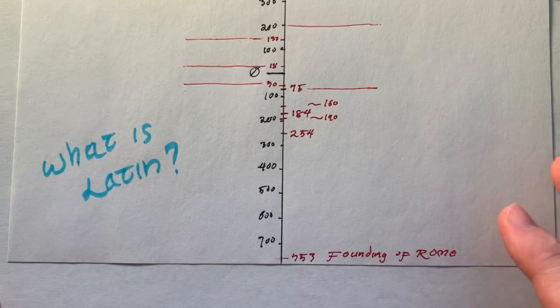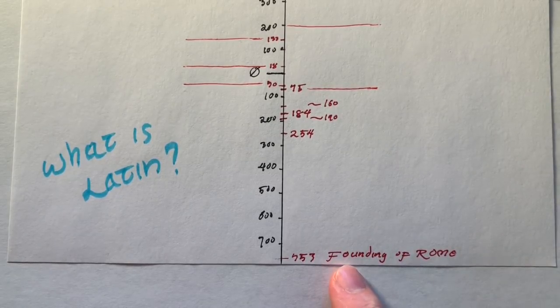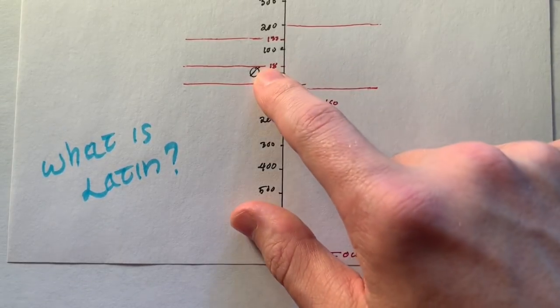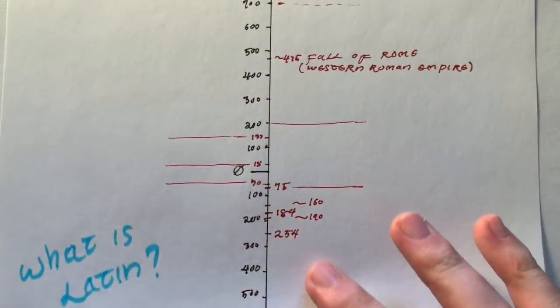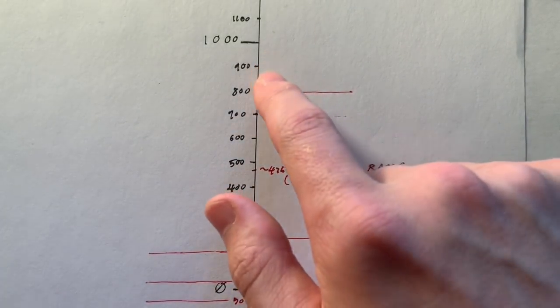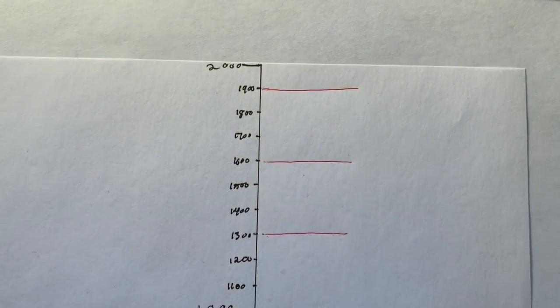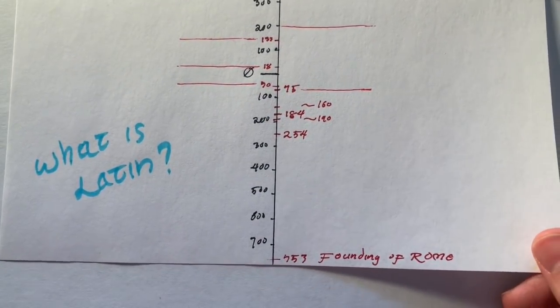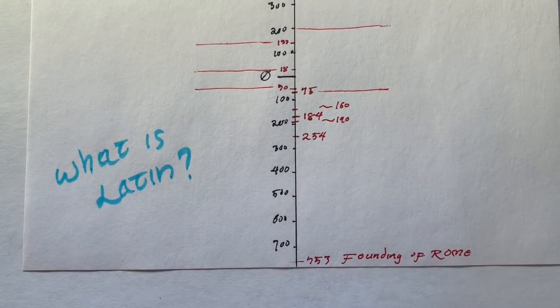Here we have a timeline I have drawn up. We can talk about the passage of time. Here we see the legendary founding of Rome in 753 BC, the year zero, and then there's a thousand and there's present day 2000. And there are different ages here that we'll talk about.